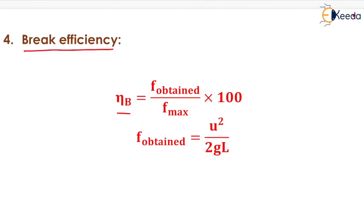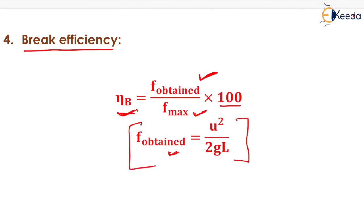Brake efficiency equals (F obtained / F maximum) × 100. F obtained is calculated as U² / (2GL) from previous derivations, and F maximum is given. Dividing and multiplying by 100 gives the brake efficiency. That is all about traffic characteristics. Thank you very much, students.